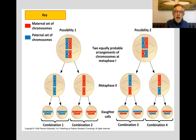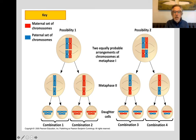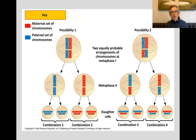Here's a diagram showing that. Notice that in one case, maternal chromosomes are on one side and paternal on the other. In another arrangement, one maternal is on one side and one paternal on the other, and vice versa — giving four different combinations of chromosomes in the daughter cells. The formula is two to the N; with a haploid number of two, two to the two equals four, and you can see those four combinations.